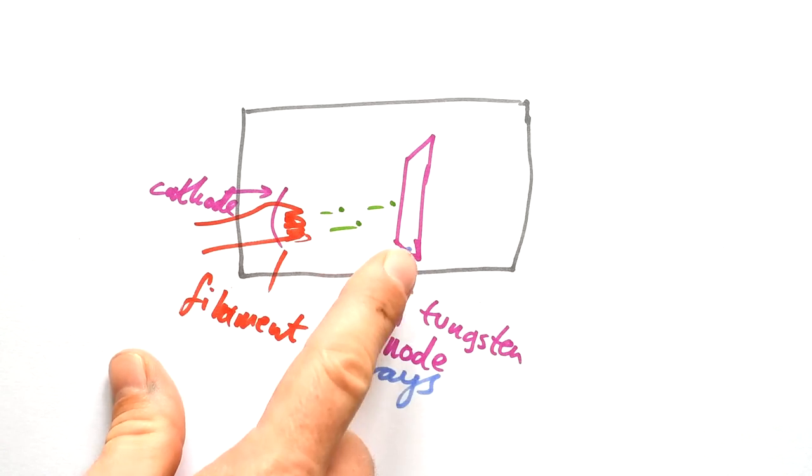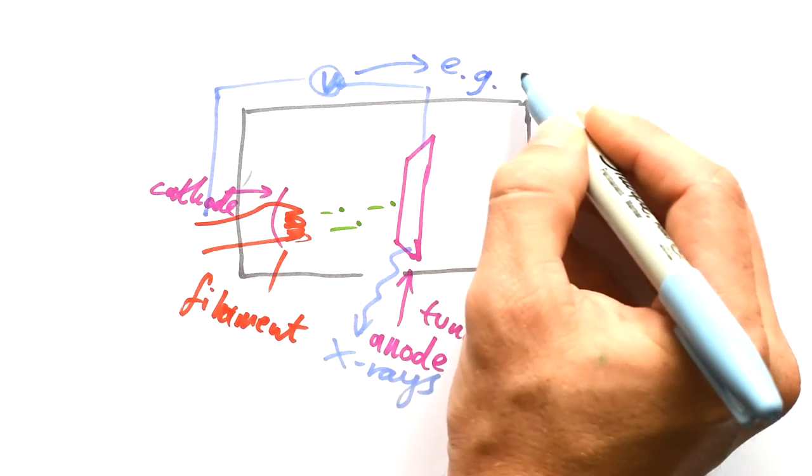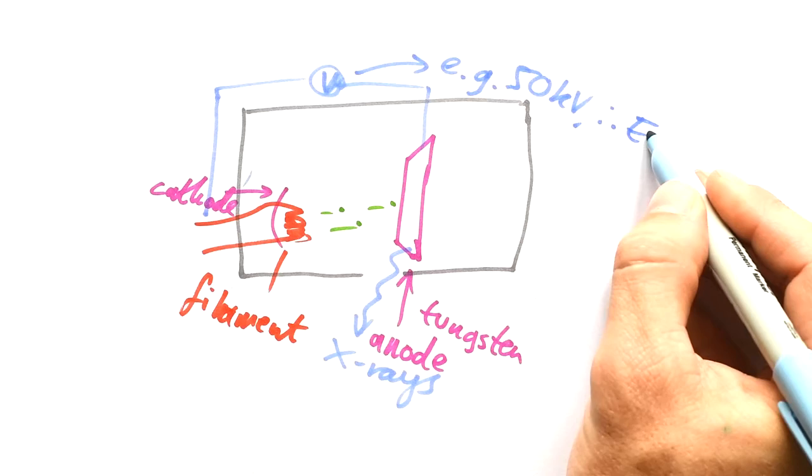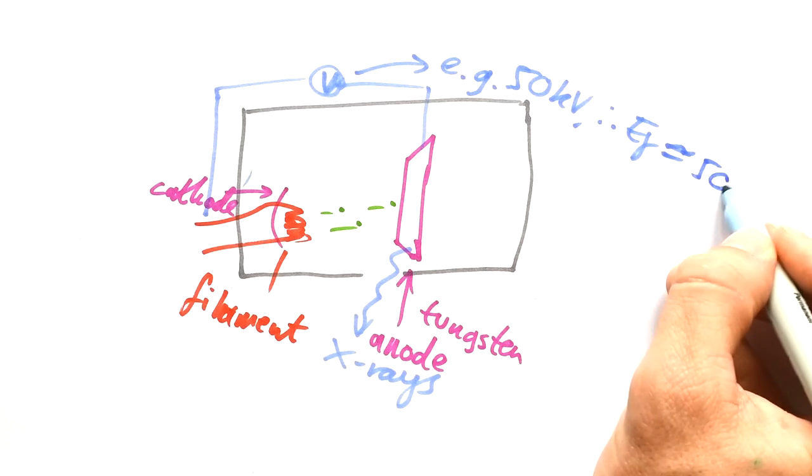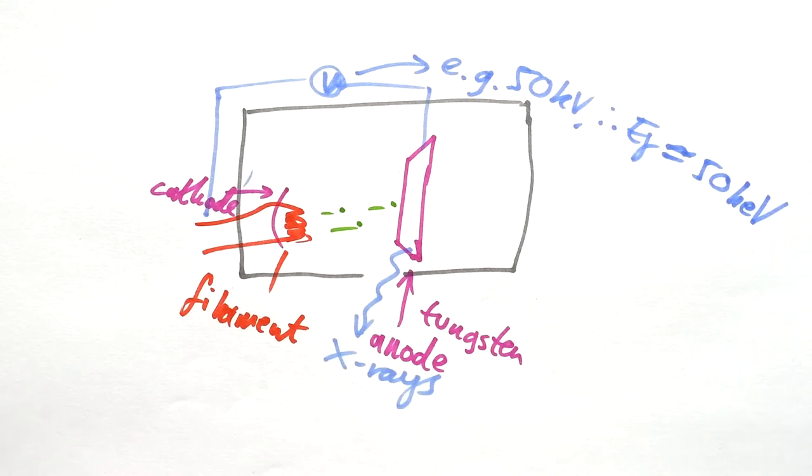The more energy that the electrons smack the tungsten anode with, the greater the frequency of the X-rays produced. Let's say that this is about 50 kilovolts. Therefore, the energy of the photons being released will be around, we're always going to be less than 50 kiloelectron volts. Because to get from a PD to an energy, we just times by charge. E equals QV.